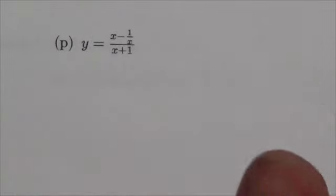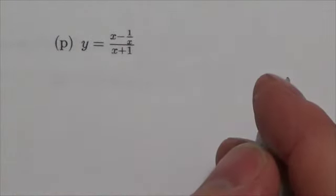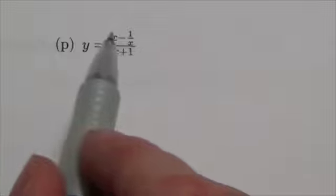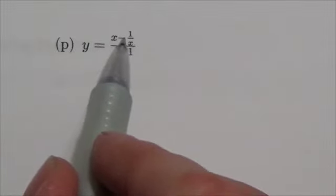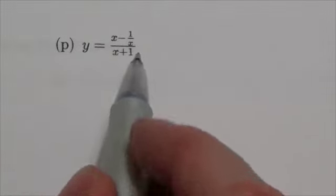I've got to take the derivative of this. Okay, now here's a good example of something that's going to end up being the quotient rule. What I'm going to do here is simplify this a little bit. I don't like this x minus 1 over x over x plus 1.